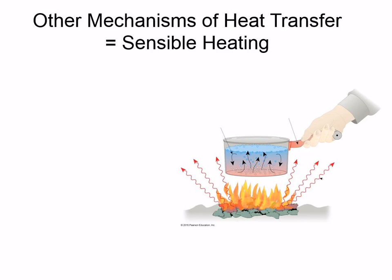Latent heat — the whole melting ice and vaporizing water — is actually a way to transfer energy when you do those things. Anything that's not latent heat is called sensible heating. These are ways where you can almost see the heat relocate.